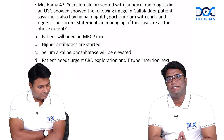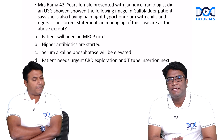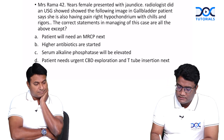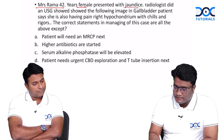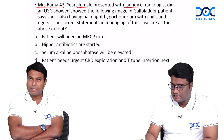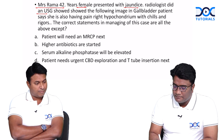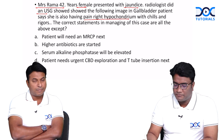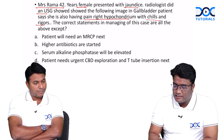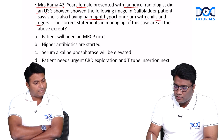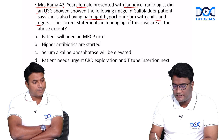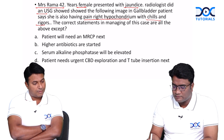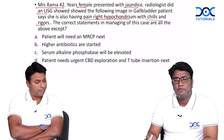Let's move on to the next question in the radiology-surgery integrated video section. In this next question we have a case: Mrs. Rama, 42-year-old female presented with jaundice. The radiologist did an ultrasound which showed an image in the gallbladder. The patient says she is also having pain in the right hypochondrium, chills and rigors. The correct statement in the management of this case — all the following except: patient will need an MRCP; higher antibiotics are started; serum alkaline phosphatase levels will be elevated; patient needs urgent CBD exploration and T-tube insertion.